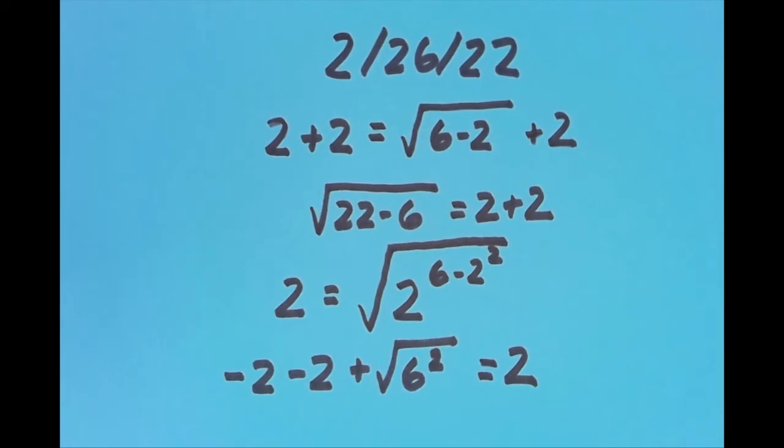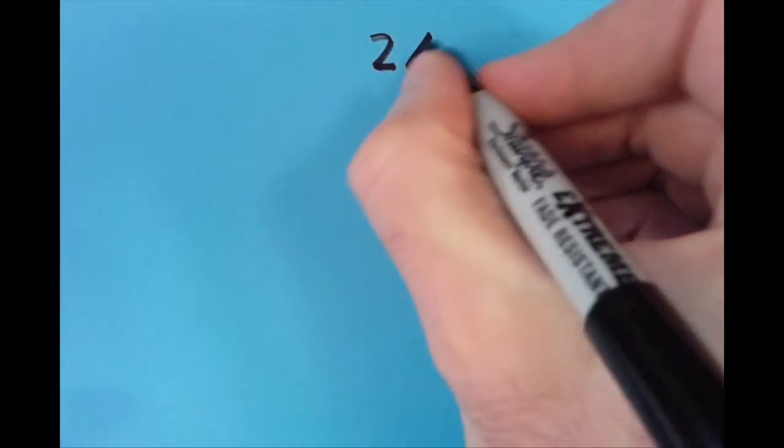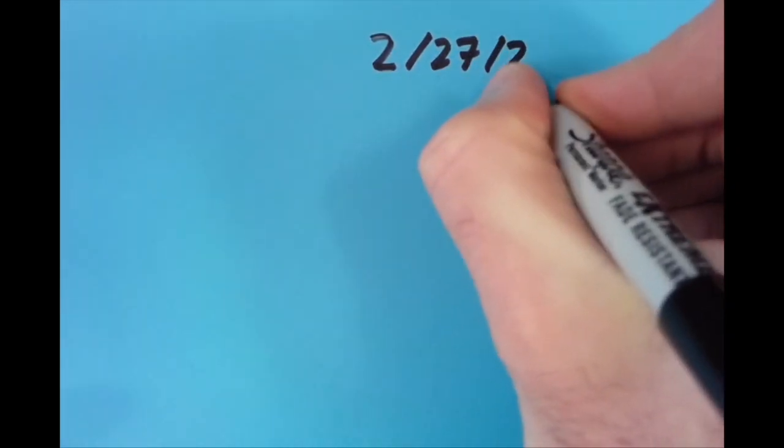Tomorrow's date is the 27th, so that's 2/27/22. Go ahead and see if you can make an equation by using the digits in this date, keeping them in order. I'll do the same thing and share my results tomorrow, and you can always share your results for this in tomorrow's comments as well. Thanks so much for watching, have a great day.